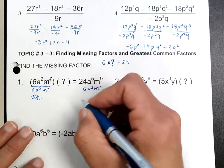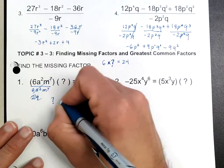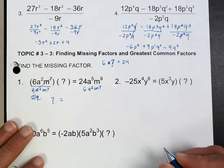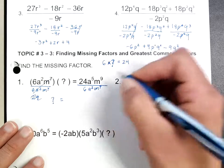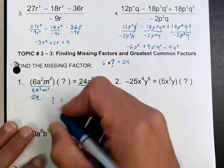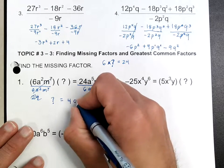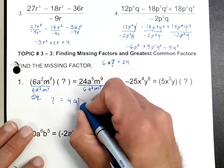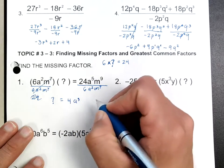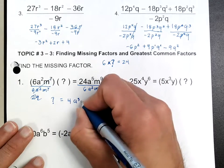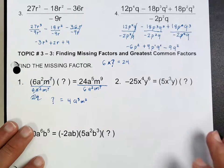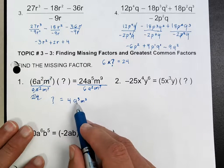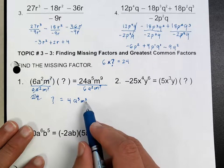So if I divide both of these by that, I'm going to figure out what that's going to be equal to. So that's going to be 4a — remember 5 minus 2 is 3 — so that's a to the third power, and this would be m to the second power. So that's the missing factor: 4a cubed m squared.